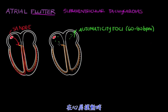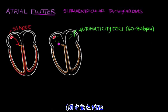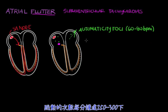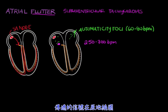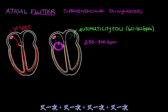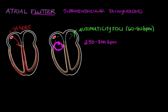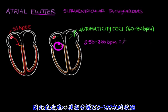In atrial flutter, there's a really irritable automaticity focus — I'm drawing that here in purple. This irritable focus is going to fire at a rate between 250 and 300 beats per minute, which is a lot faster than the rest of the foci. The electrical signal travels around in a circular pattern, looping again and again. This causes the atria to contract at a rate between 250 and 300 beats per minute.